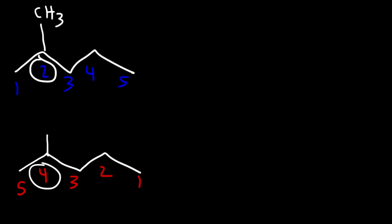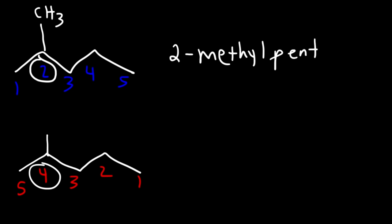So how can we name it? We have a methyl group on carbon two, and there are five carbons in the parent chain. So this is going to be called 2-methylpentane. You need to use a hyphen to separate a number from a word.